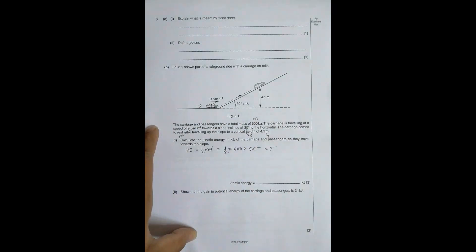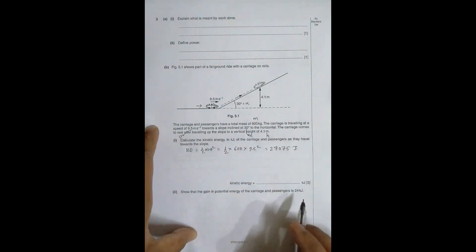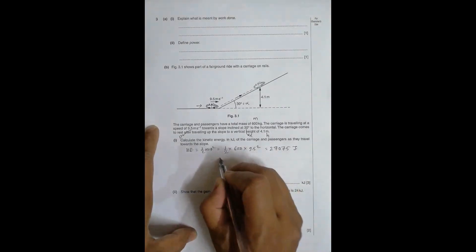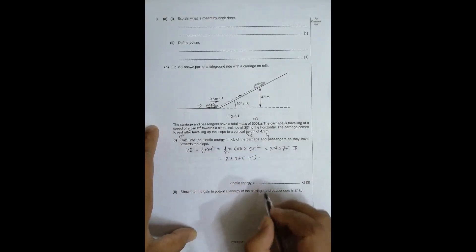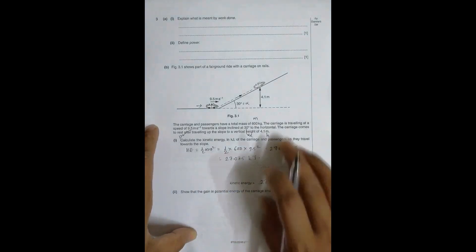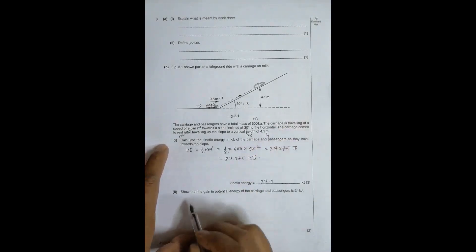Using the calculator, this is 27,075 joules. Since we have to express in terms of kilojoules, I can say it as 27.075 kilojoules, and I can write it as 27.1 kilojoules when written to 3 significant figures.